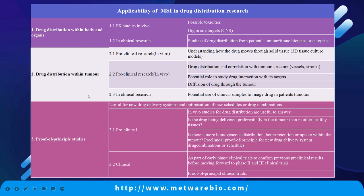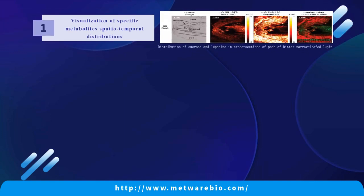Next, let's look at the use of spatially resolved metabolomics in plants. It is also widely used in plants. First, it can study the distribution of specific metabolites, such as Chinese herbal medicine ingredients. In addition, there are characteristic substances such as color-related anthocyanins, and quality-related substances. The accumulation and transport of substances during growth and development can also be studied — for example, hormones that promote plant growth and development.